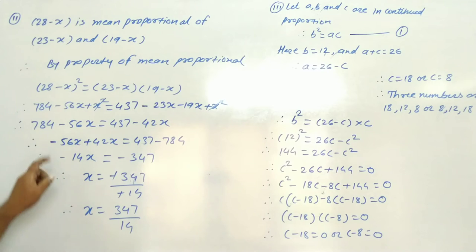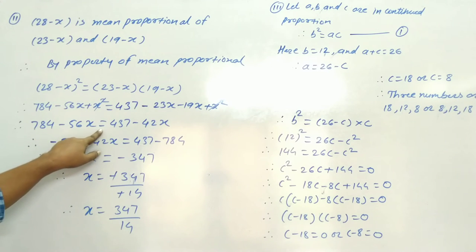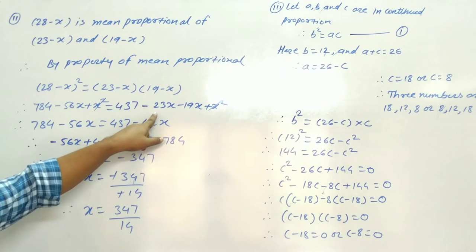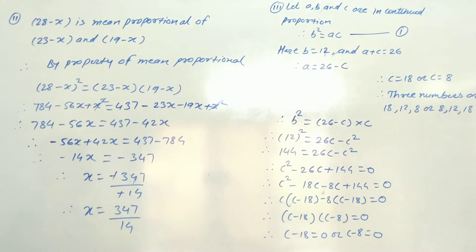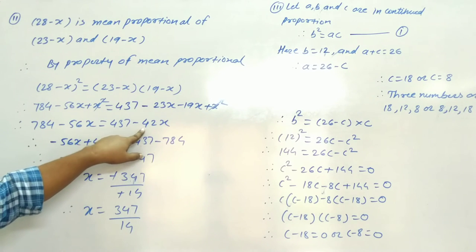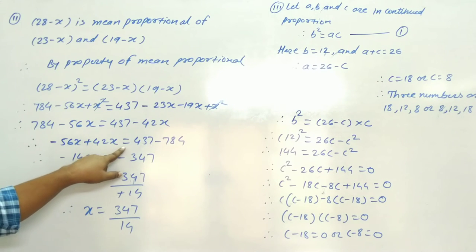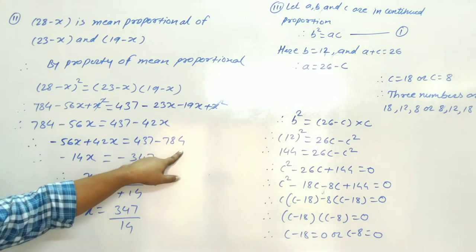The x squared terms cancel on both sides. So 784 minus 56x is equal to 437 minus 42x, where minus 23 minus 19 gives minus 42x.